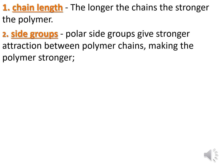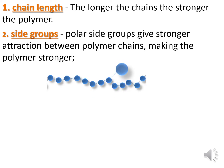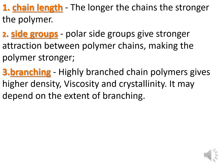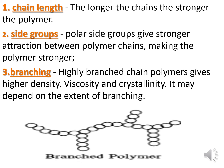Second, side groups: polar side groups give stronger attraction between polymer chains, making the polymer stronger. Polar side groups may have functional groups such as acid, amines, or alcohol. Third, branching: highly branched chain polymers give higher density, viscosity, and crystallinity, depending on the extent of branching.